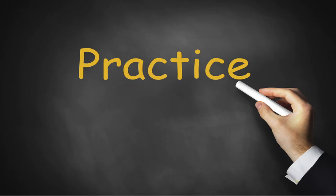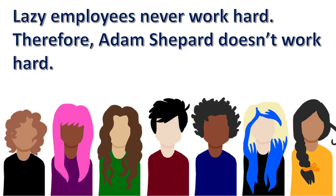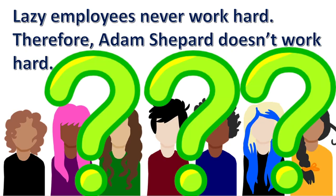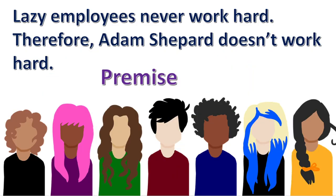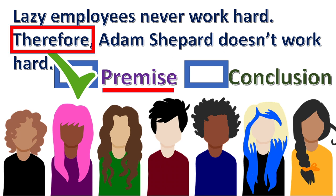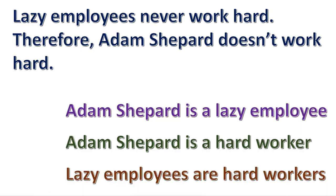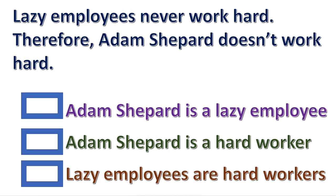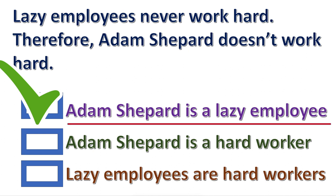Let's work a practice problem. For this enthymeme, what's missing — the premise or conclusion? Press pause if you need more time. The answer: the premise. Notice the indicator word. Next, choose the correct missing premise. Press pause if you need more time. This is the correct premise.